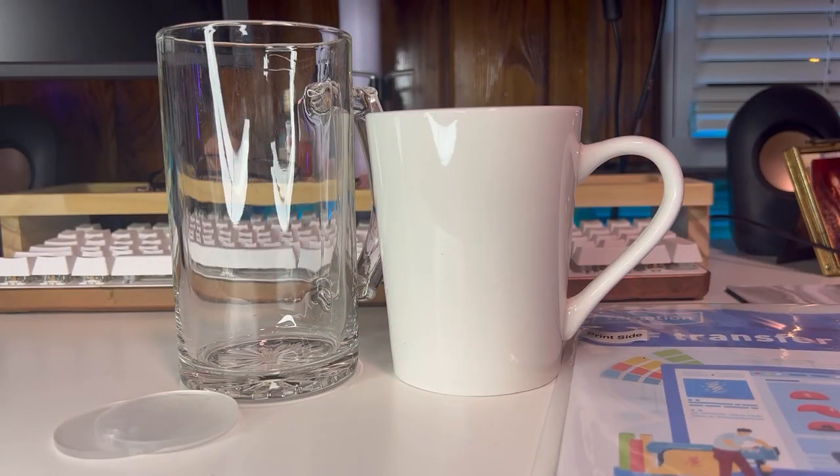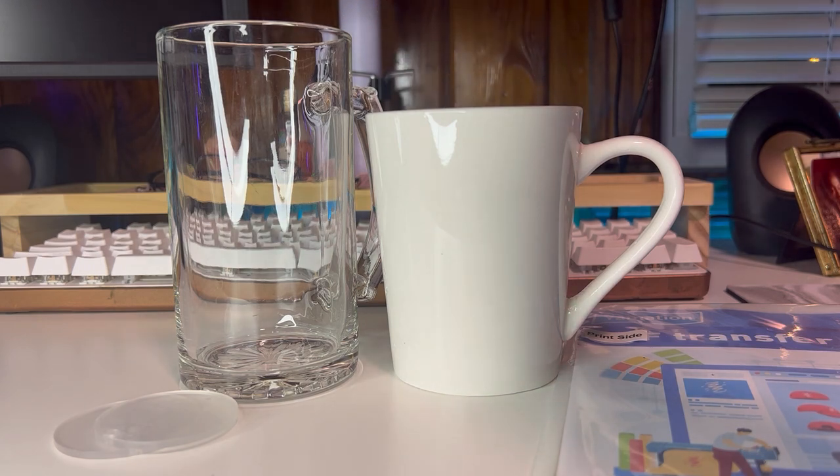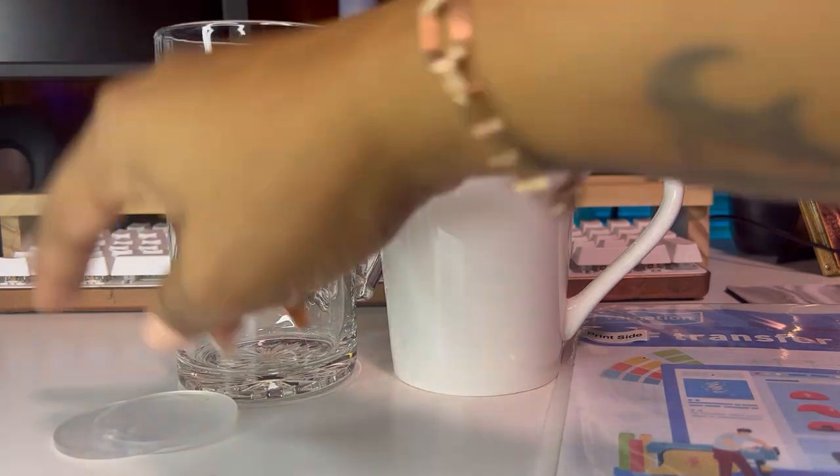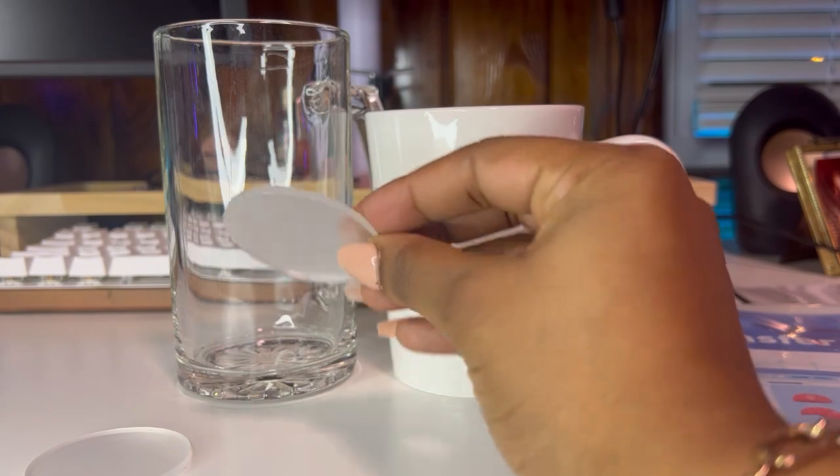Okay guys, so let me show you what we're going to be using just so you can get an idea of what we're testing today. So these two mugs I have here are from the Dollar Tree. So these are regular non-sublimation Dollar Tree mugs. I have some acrylic keychain blanks here.